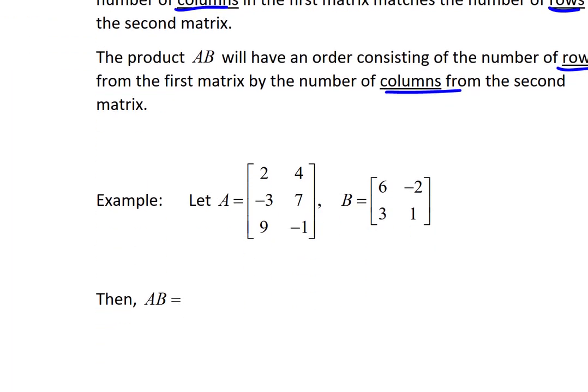Here's an example. Matrix A has order three rows by two columns — reading across its rows: 2, 4, negative 3, 7, 9, negative 1. Matrix B is a 2 by 2 matrix, reading across rows from top to bottom: 6, negative 2, 3, 1. According to the definition, the inner numbers — the number of columns from the first matrix — must match the number of rows in the second matrix. And of course they do: 2 and 2 match.